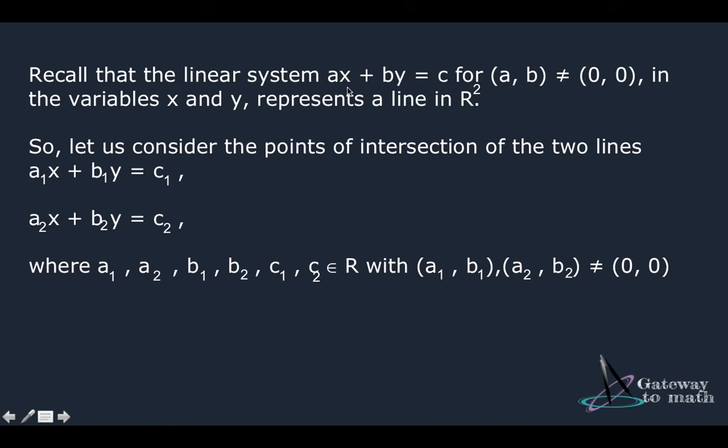Now we have a linear system of equation ax plus by which equals c. Here we have two coefficients a and b, two variables x and y, and one constant c. We're also defining that a and b should not be equal to zero. And we have two variables x and y, which is an R squared plane because we have two unknown variables and we have a two dimensional plane with coordinates x and y.